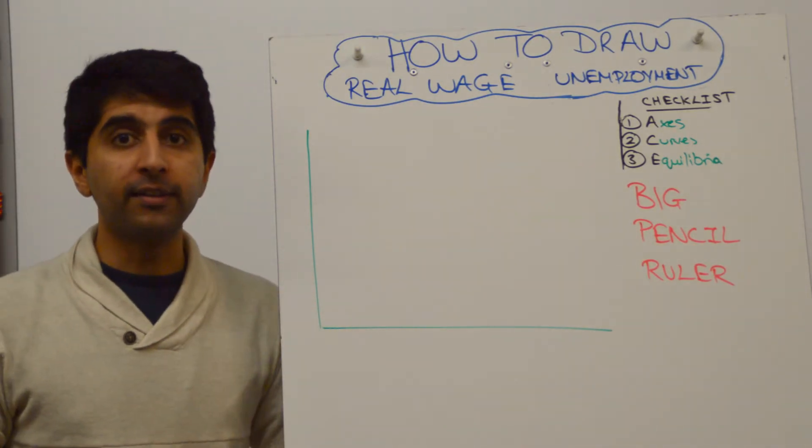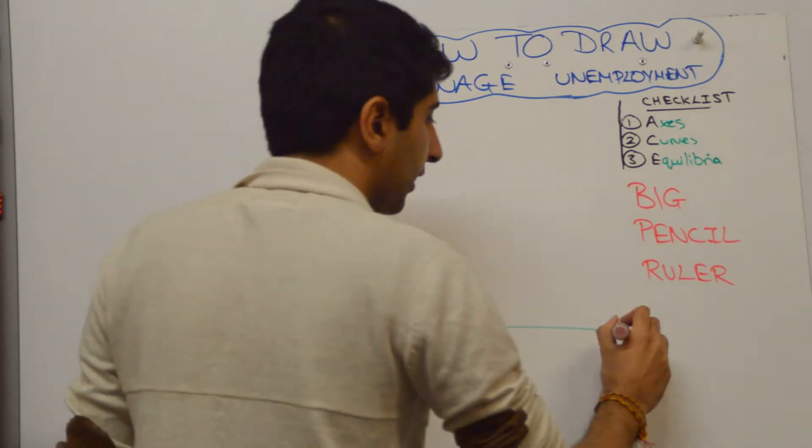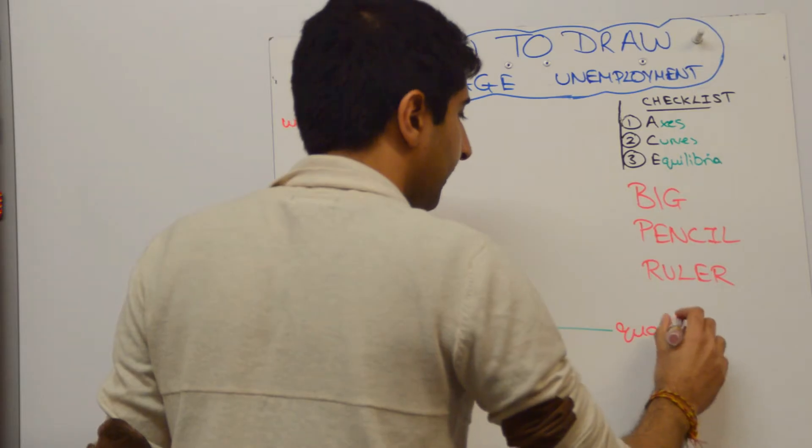So what we need to draw is a labour market, where we have wage as the price of labour on the y-axis and quantity of workers on the x-axis.